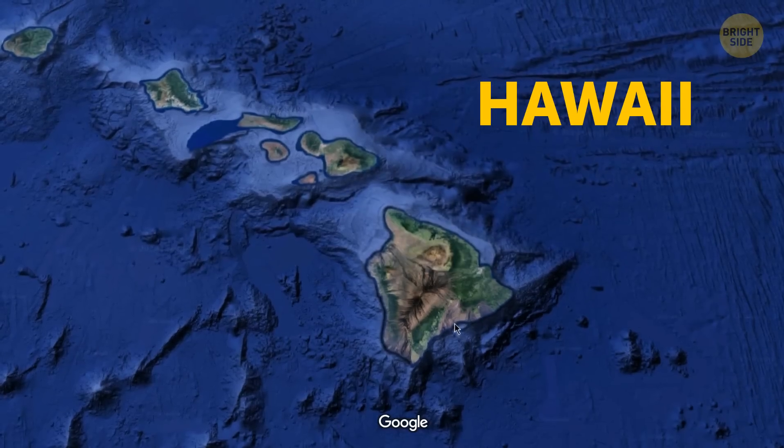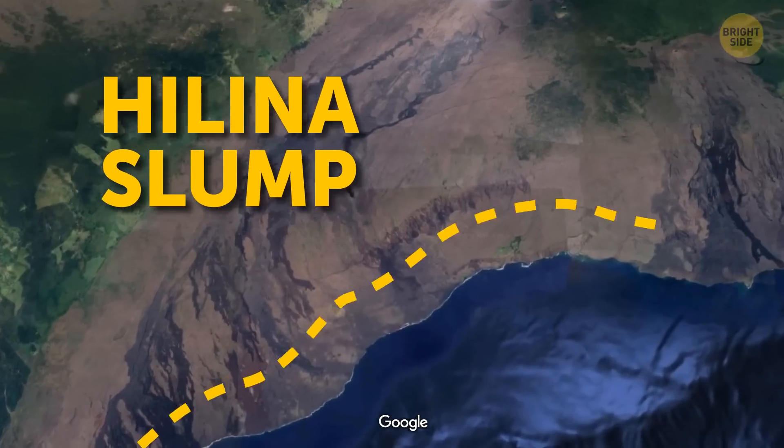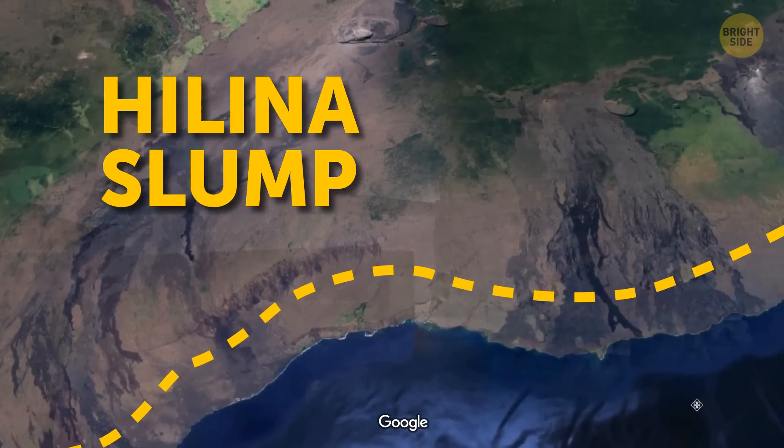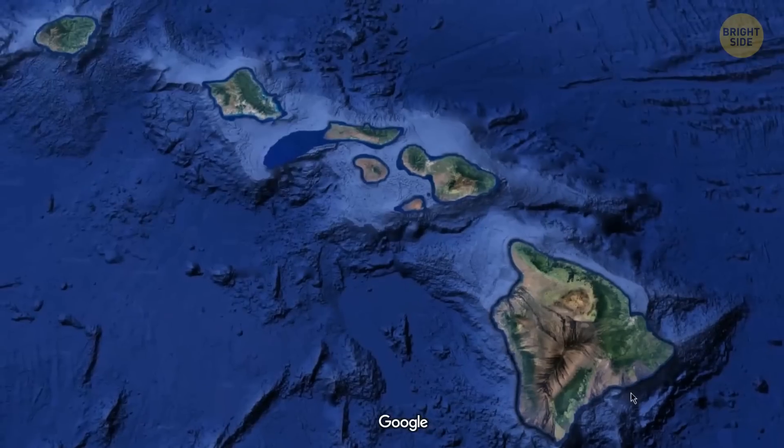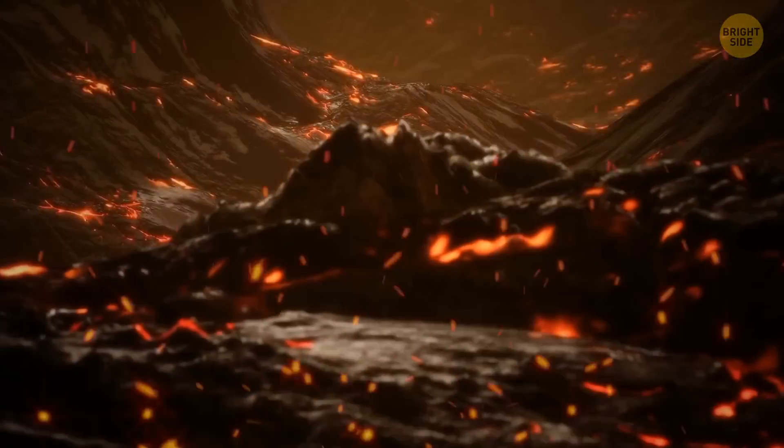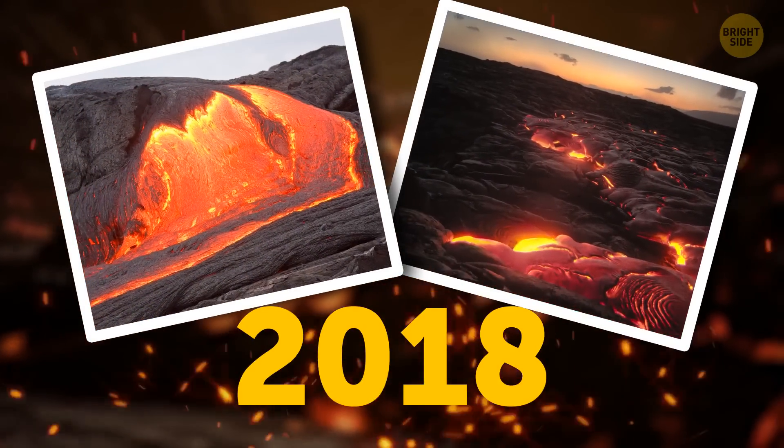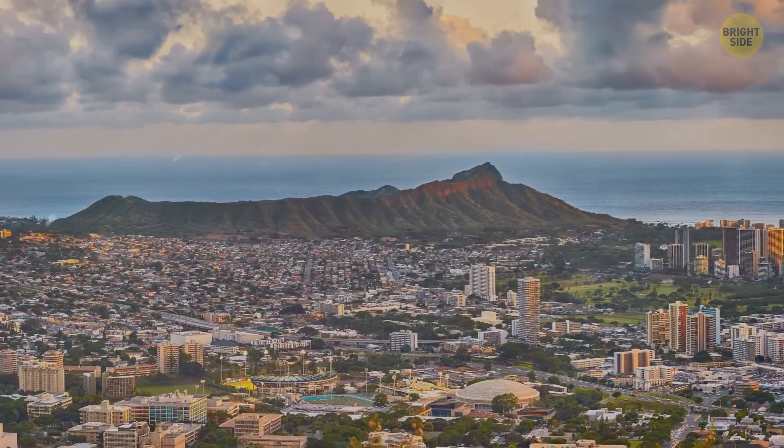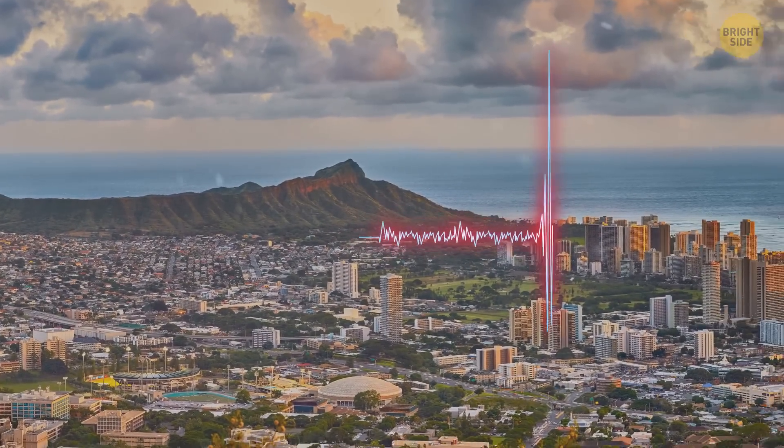This is what might happen if the Hilena slump of the Hawaiian Big Island falls off into the water. The Kilauea volcano is far from dormant. The latest eruption occurred in 2018. Its eruptions are usually accompanied by earthquakes of different magnitudes.